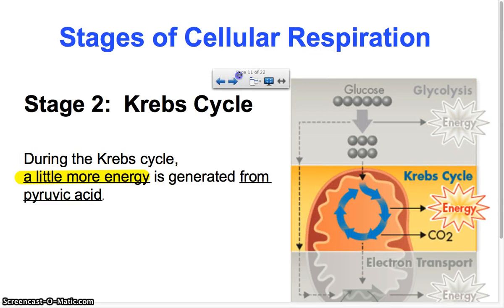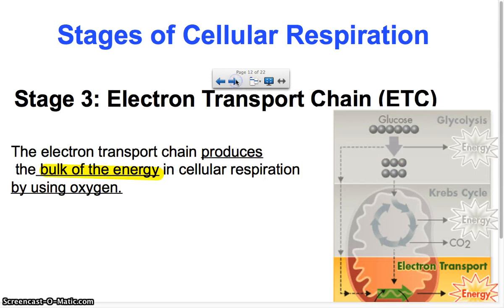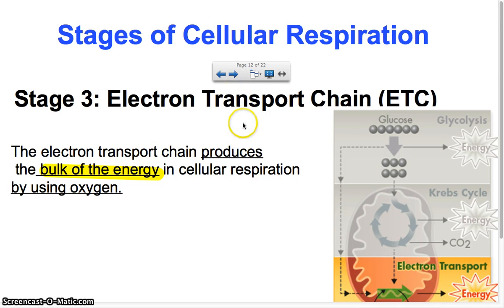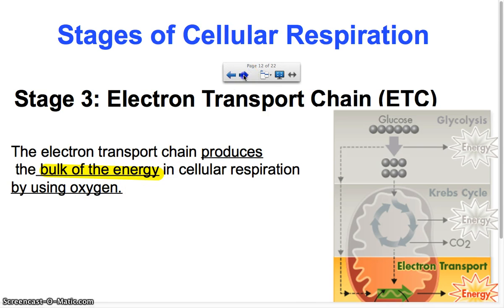Those pyruvates go on to the next part of cellular respiration: the Krebs cycle. In the Krebs cycle, the pyruvate enters the mitochondria and is used to produce some more energy, as well as CO2. Then the last step of cellular respiration is the electron transport chain, where most of the energy from cellular respiration is produced. After going through glycolysis and the Krebs cycle, it enters the electron transport chain, which also uses oxygen to produce that energy.